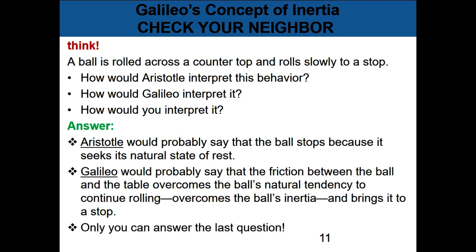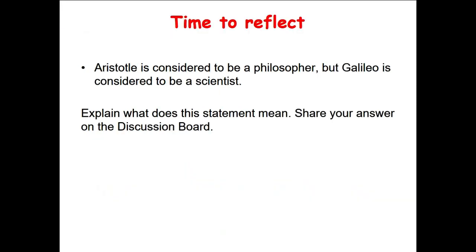For the last part, let's talk about it in class. We finish this part by asking a question: Aristotle is usually considered to be a great philosopher, but Galileo is considered to be a great scientist. What is the meaning of this statement? What is the difference between a philosopher and a scientist? Share your answer on the discussion board and we'll talk about it in class.